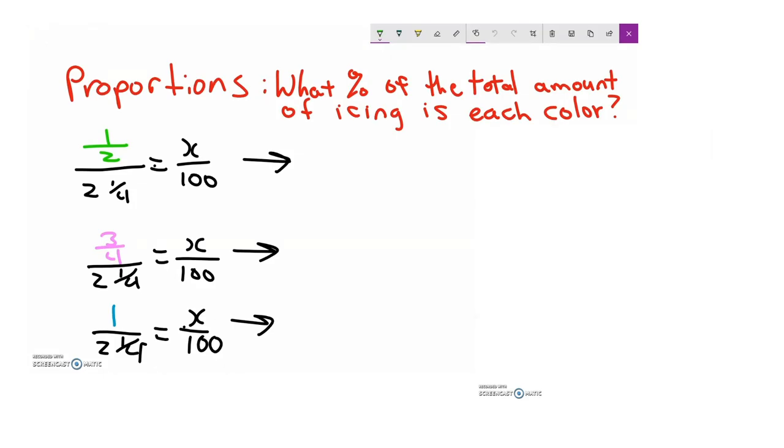So, let's start out by connecting percent and proportion here. I want to know what percent of the total amount of icing is each color. So, I could start out, first of all, by representing the half a cup of green over the two and a fourth total. And that's a complex fraction. But that's still equal to x over 100. But to solve that, I think I want to convert the fraction to a decimal and say, well, I'm going to go ahead and write 0.5 over 2.25. And that's going to equal x over 100. That's just going to make the math a little bit easier for me to solve if I'm using a calculator.